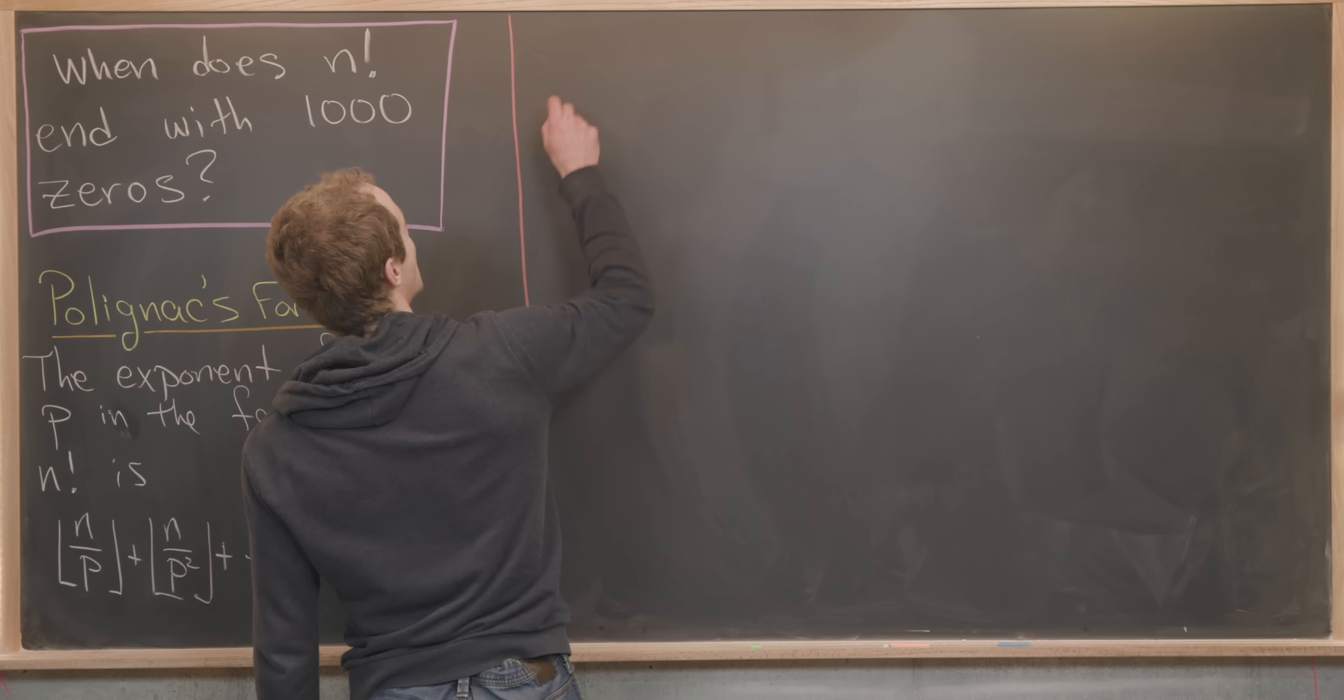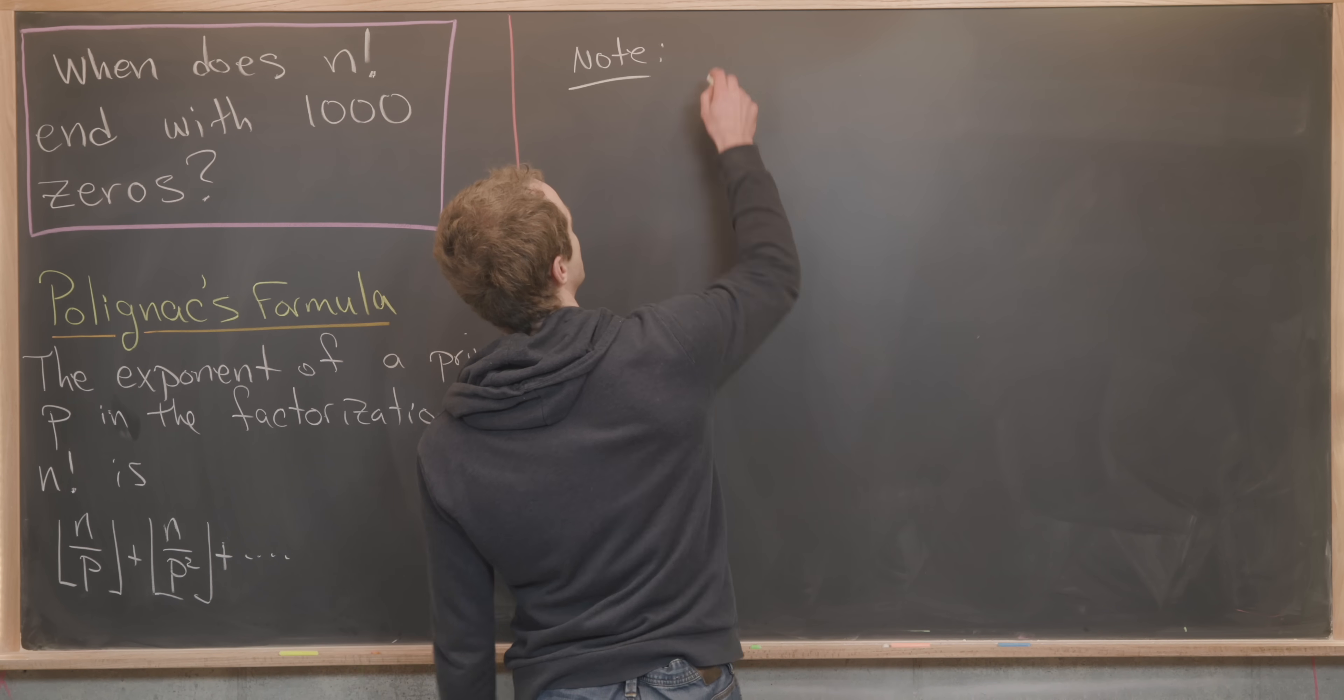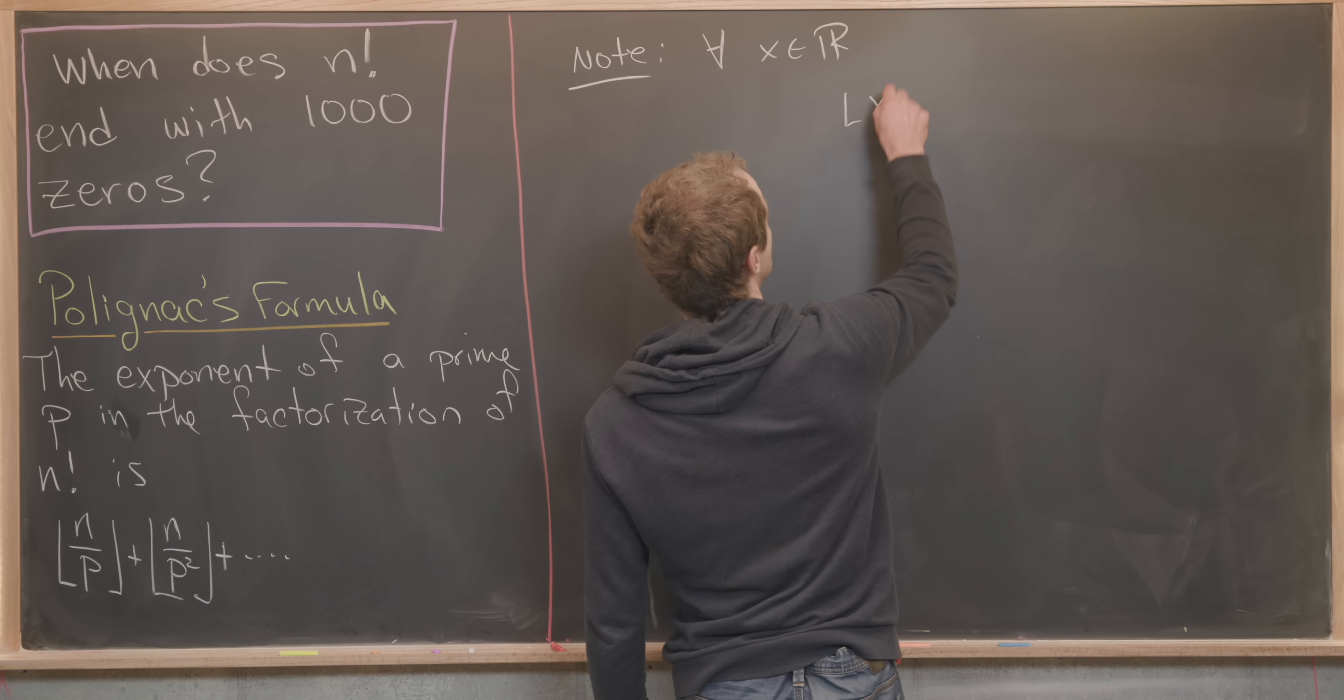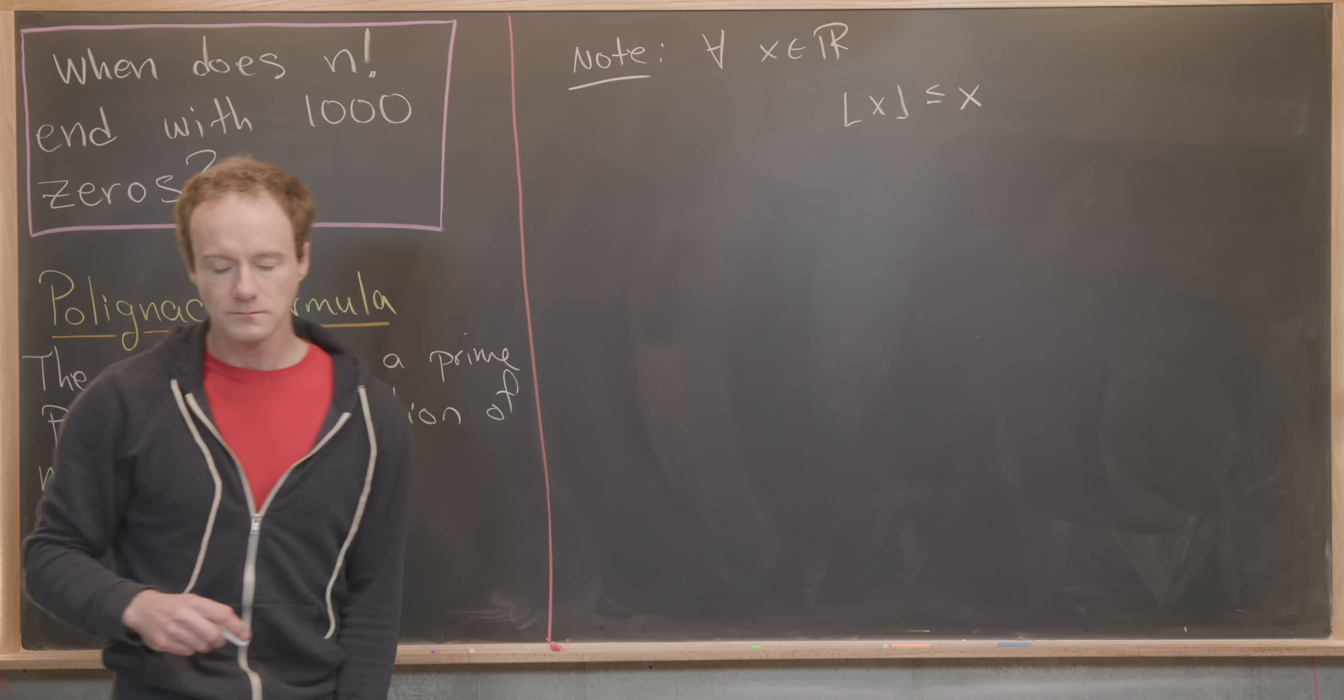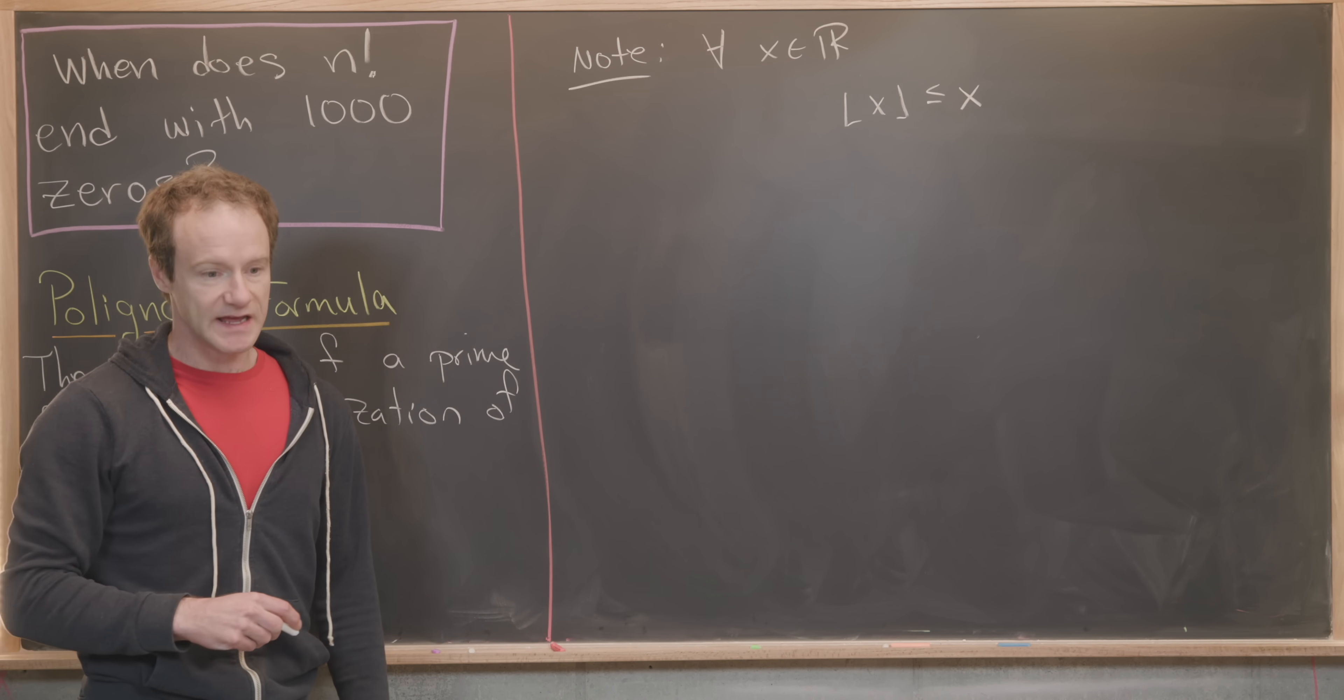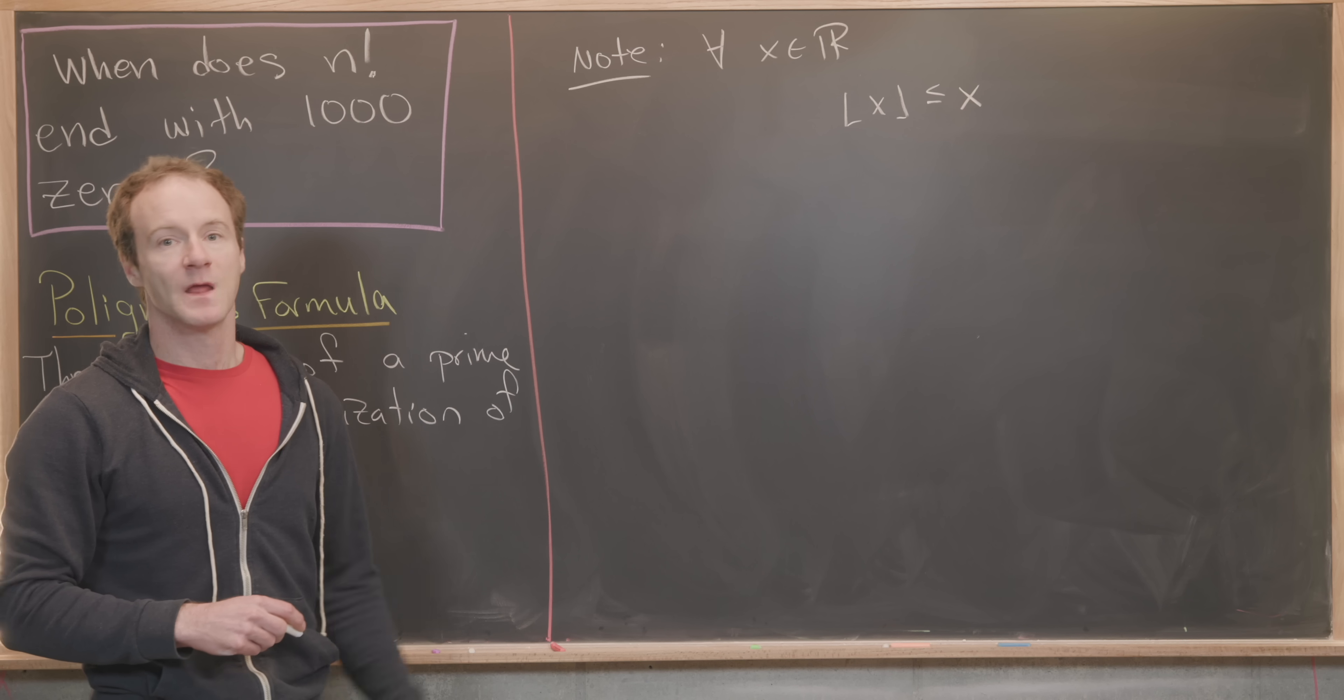First off, I want to notice we have the following inequality involving the floor function. For all x, which is a real number, we have the floor of x is less than or equal to x. That's pretty clear, given the definition of the floor—it is the greatest integer that is less than x.